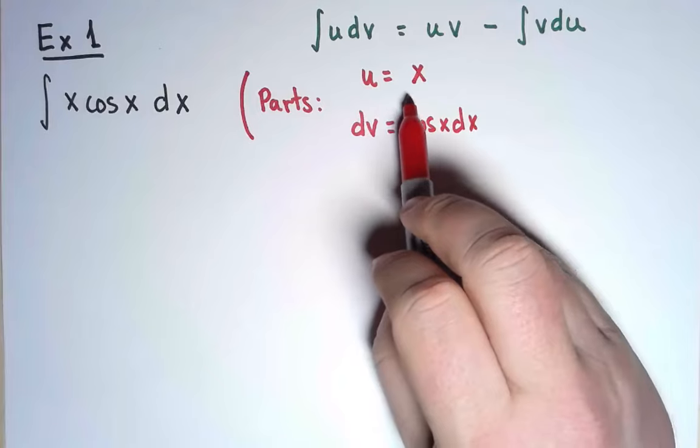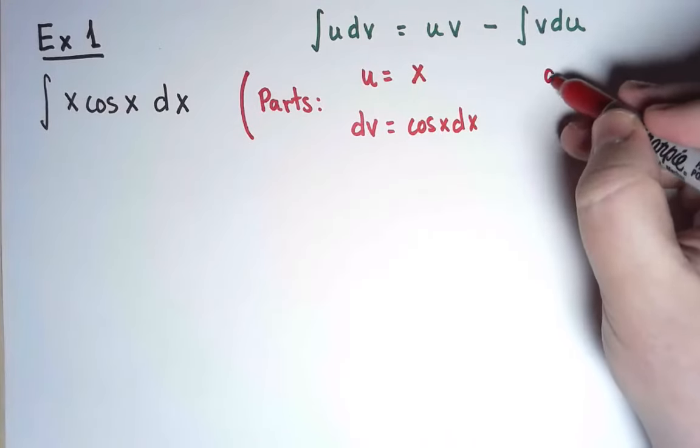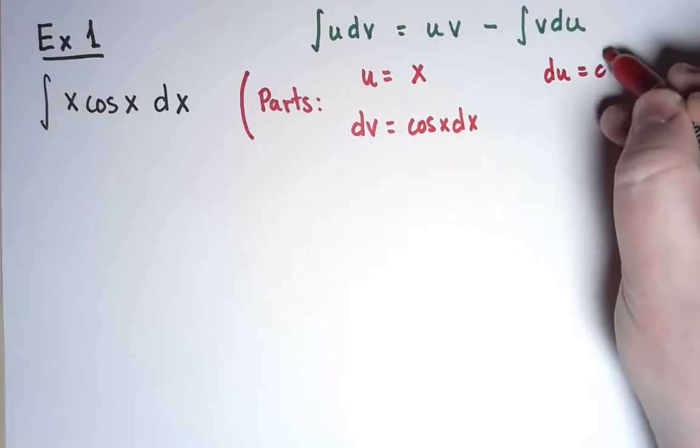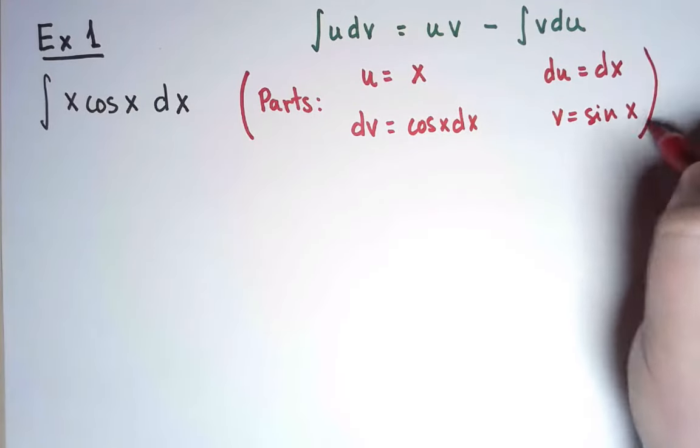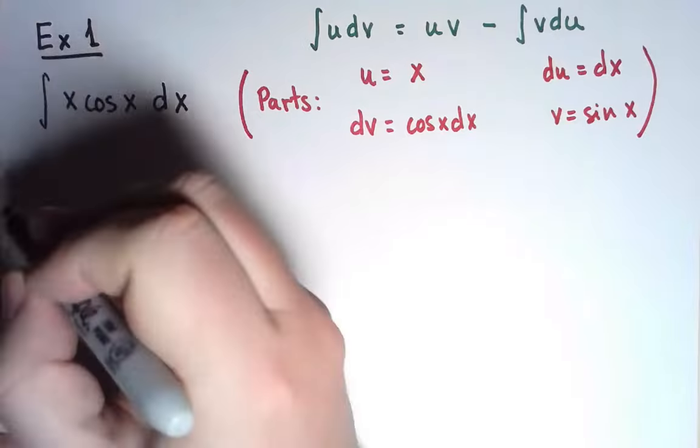If u equals x, the derivative of x is 1, so du equals dx. And an antiderivative of cos x is sin x. Let's see what I get then.